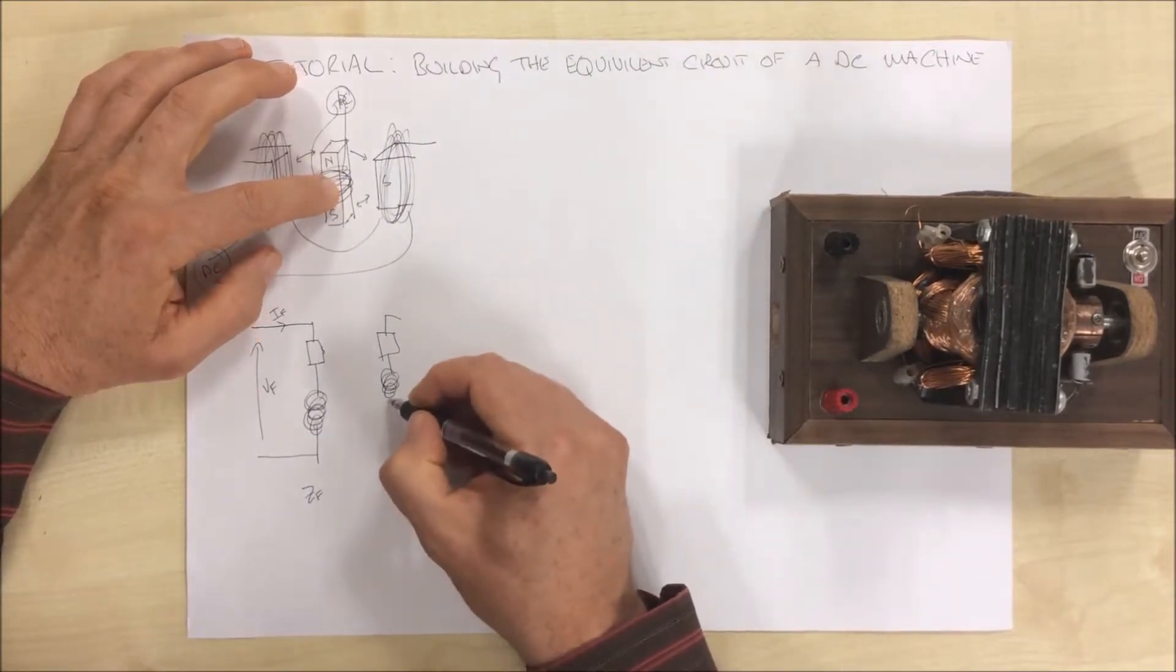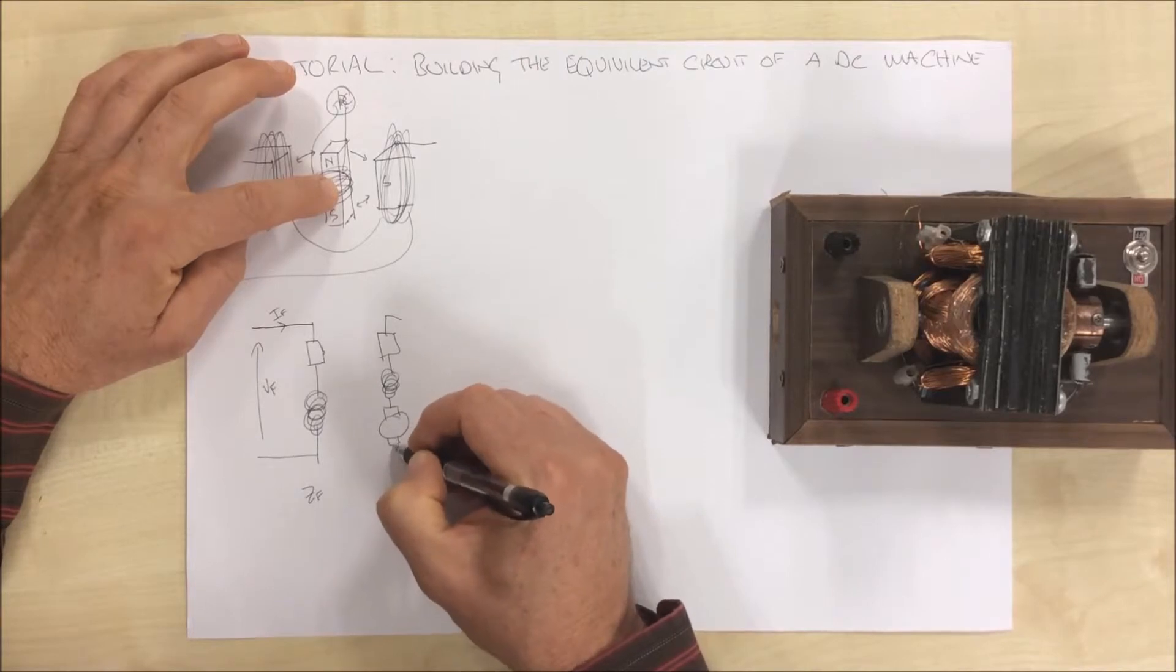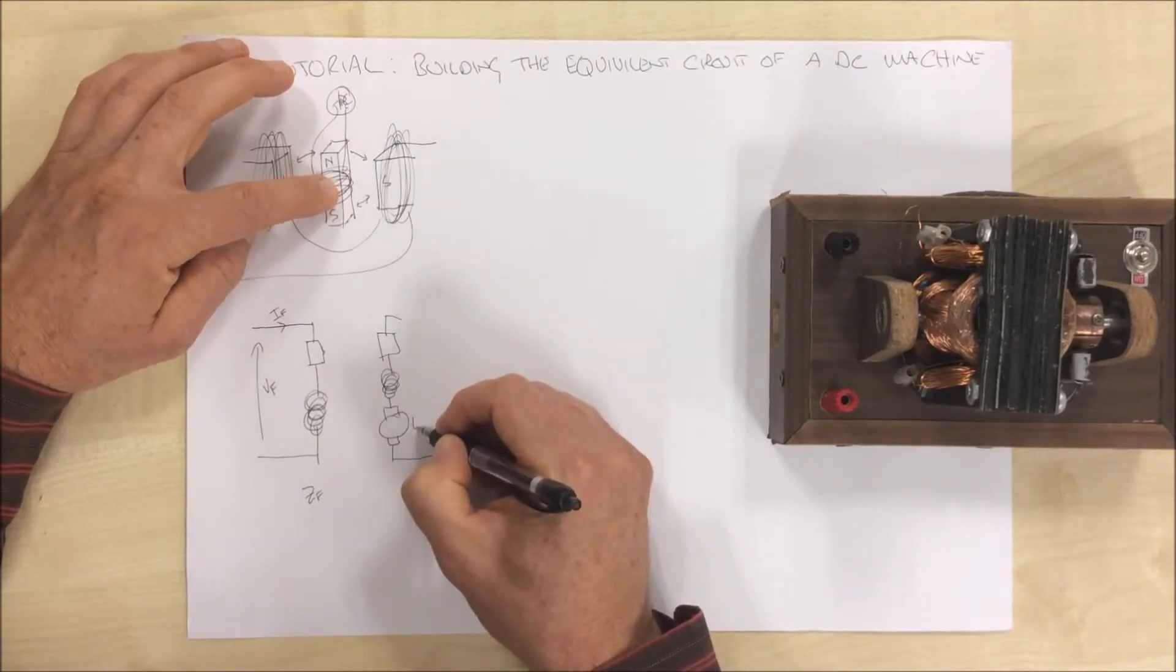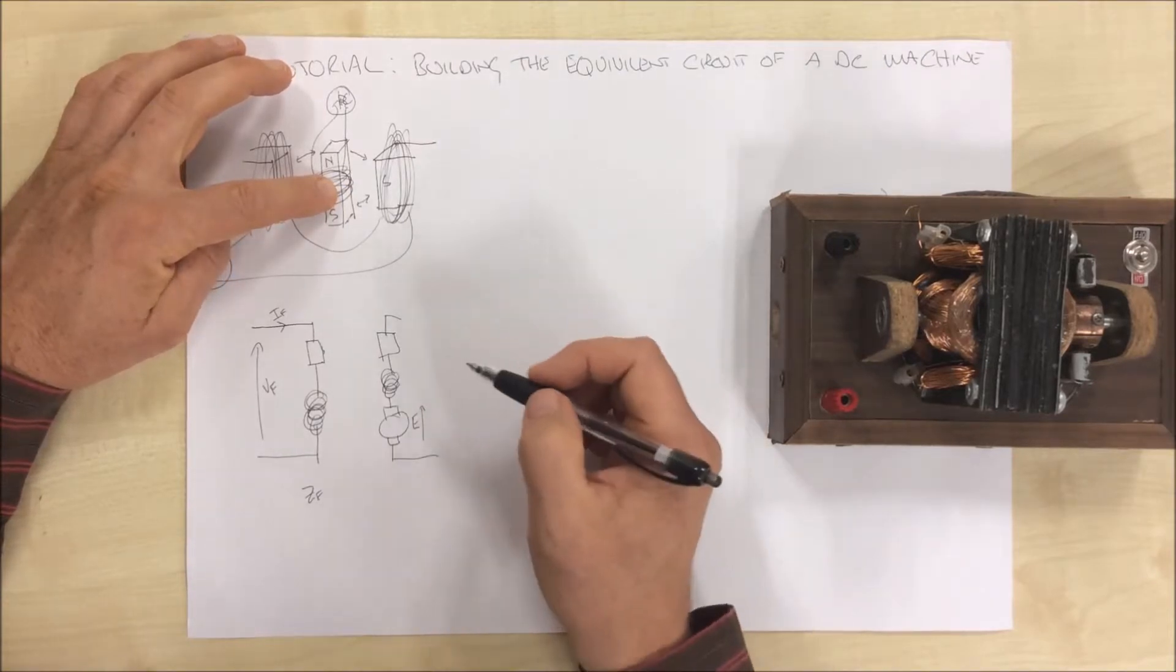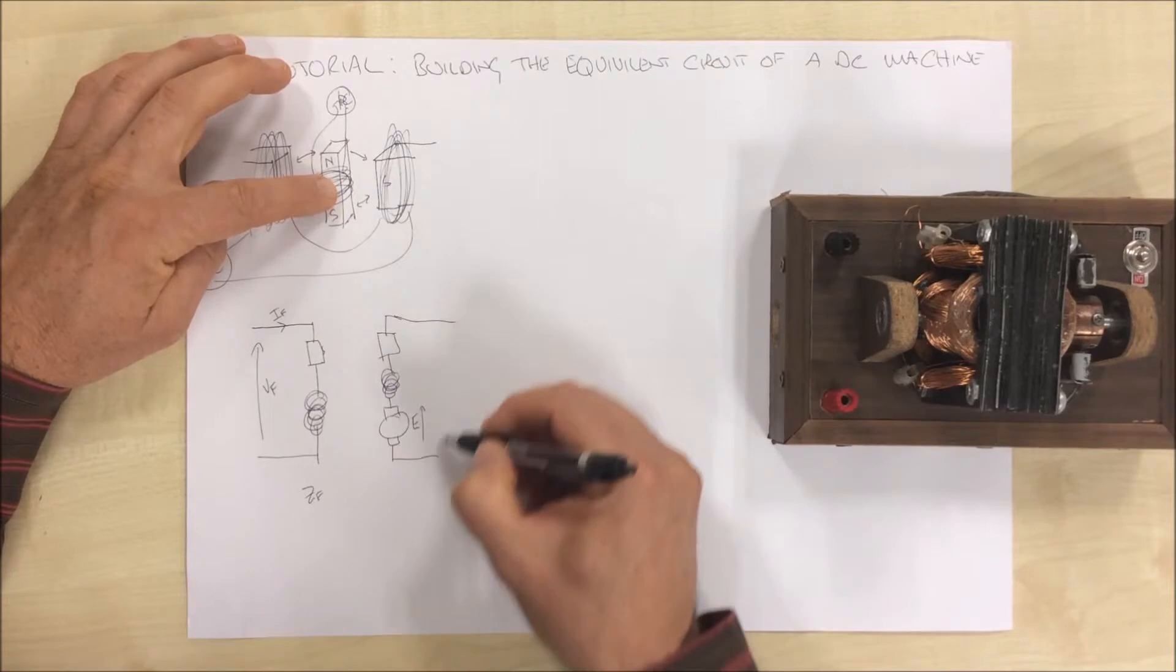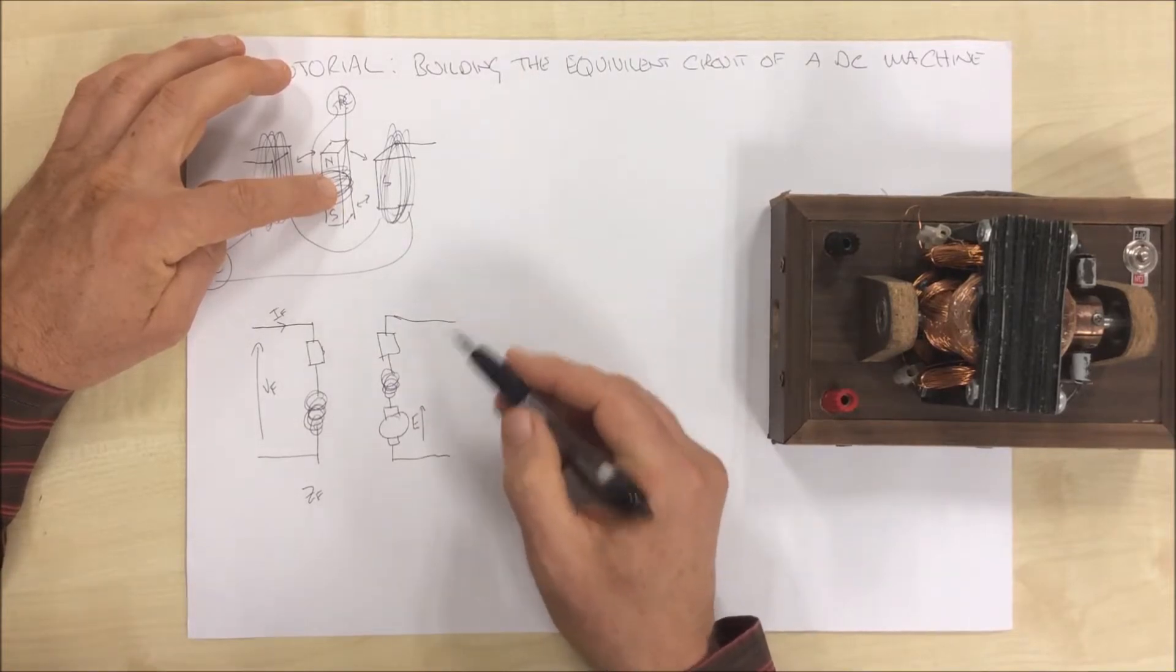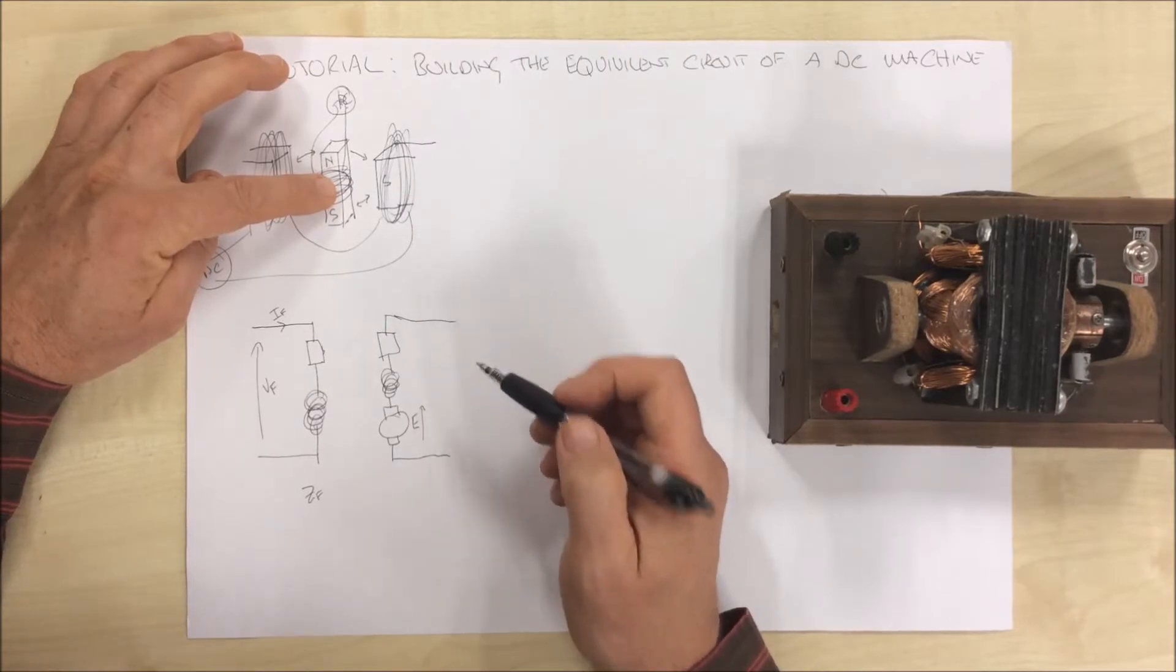And this is represented in our equivalent circuit by drawing our armature like this, which generates a back EMF here called E. So this is the basic circuit of a DC machine, but it gets even simpler than that. And this is the beauty of DC machines when it comes to understanding what's going on.